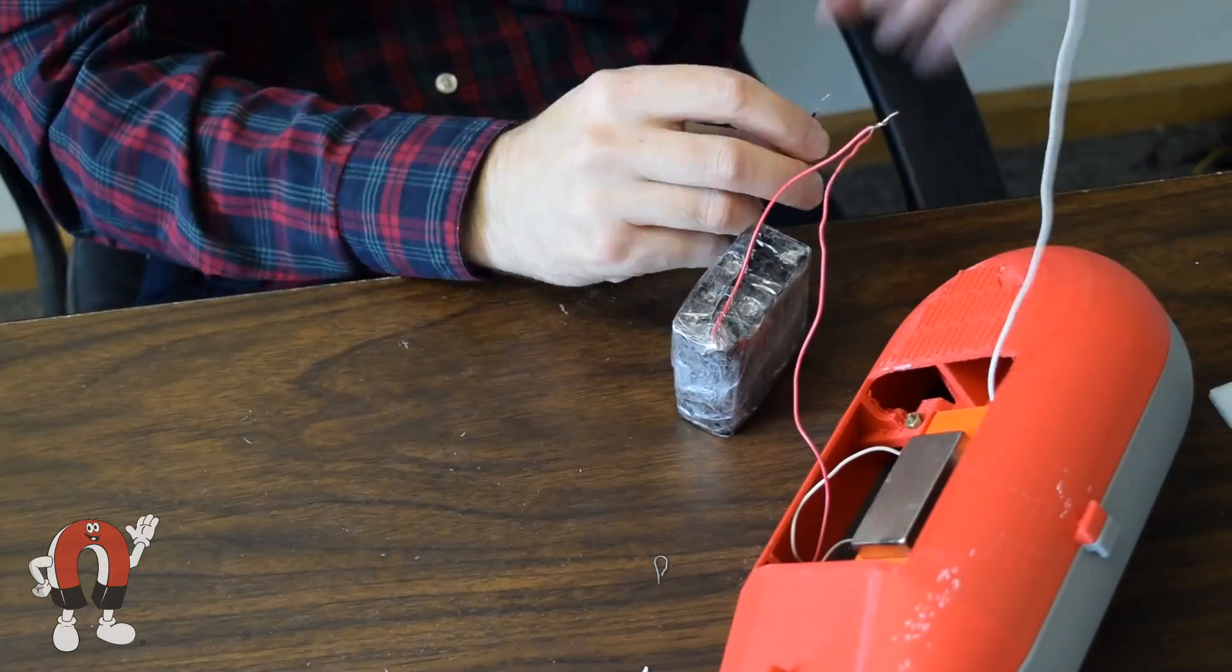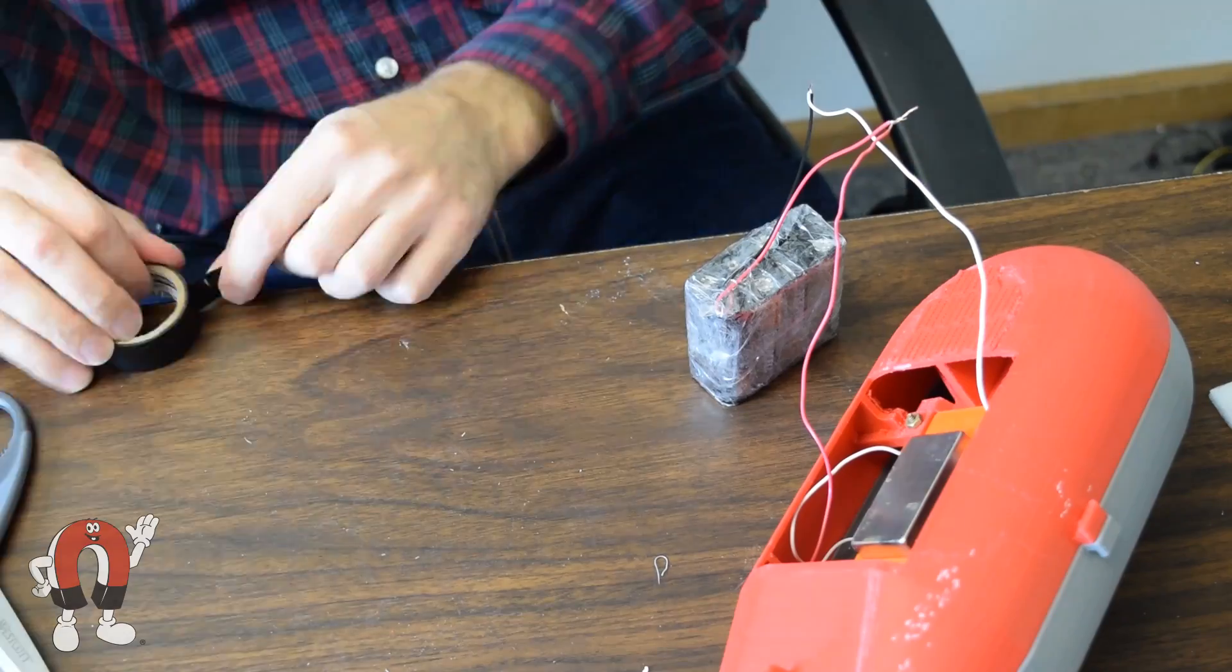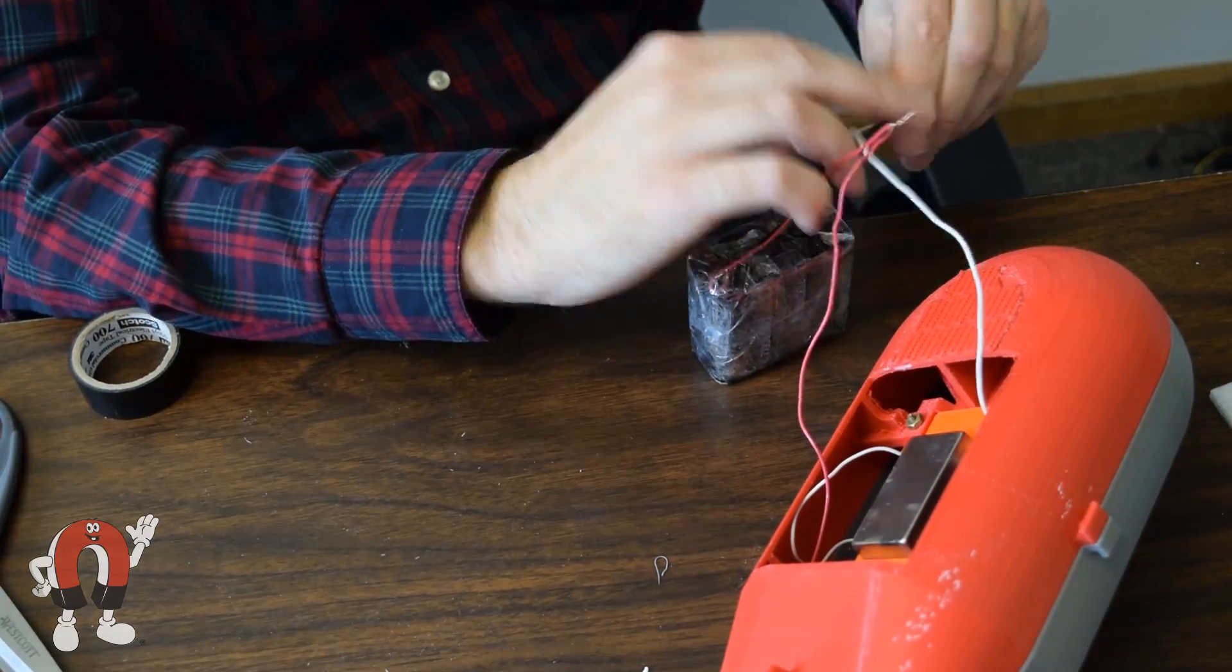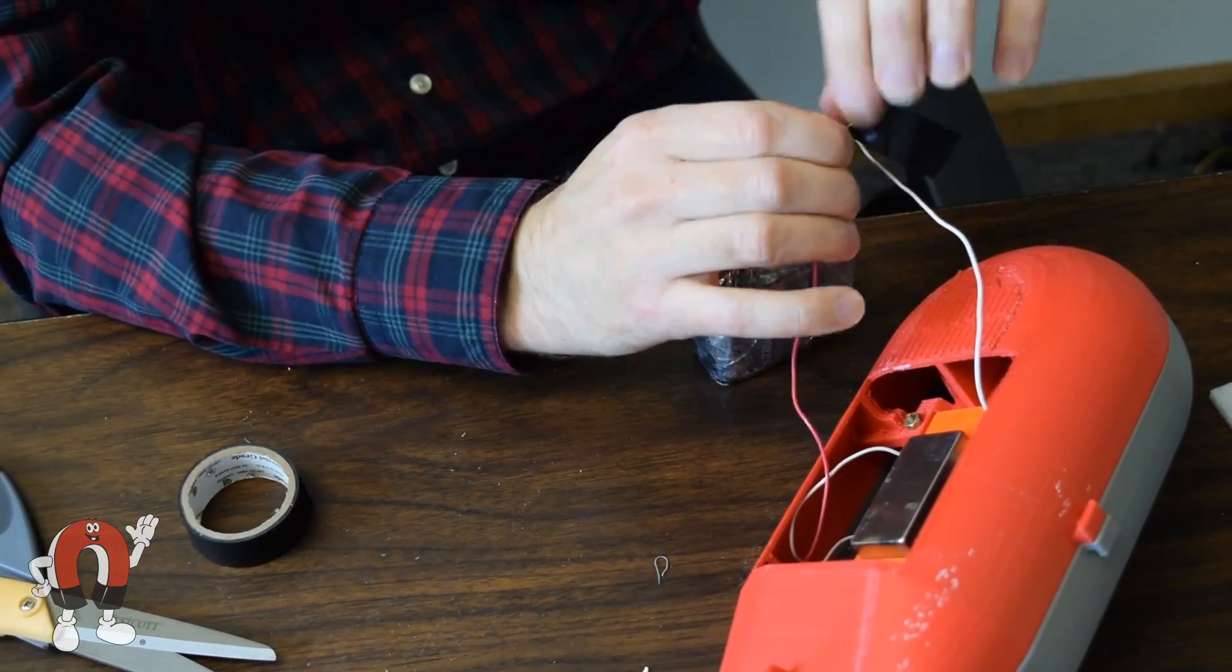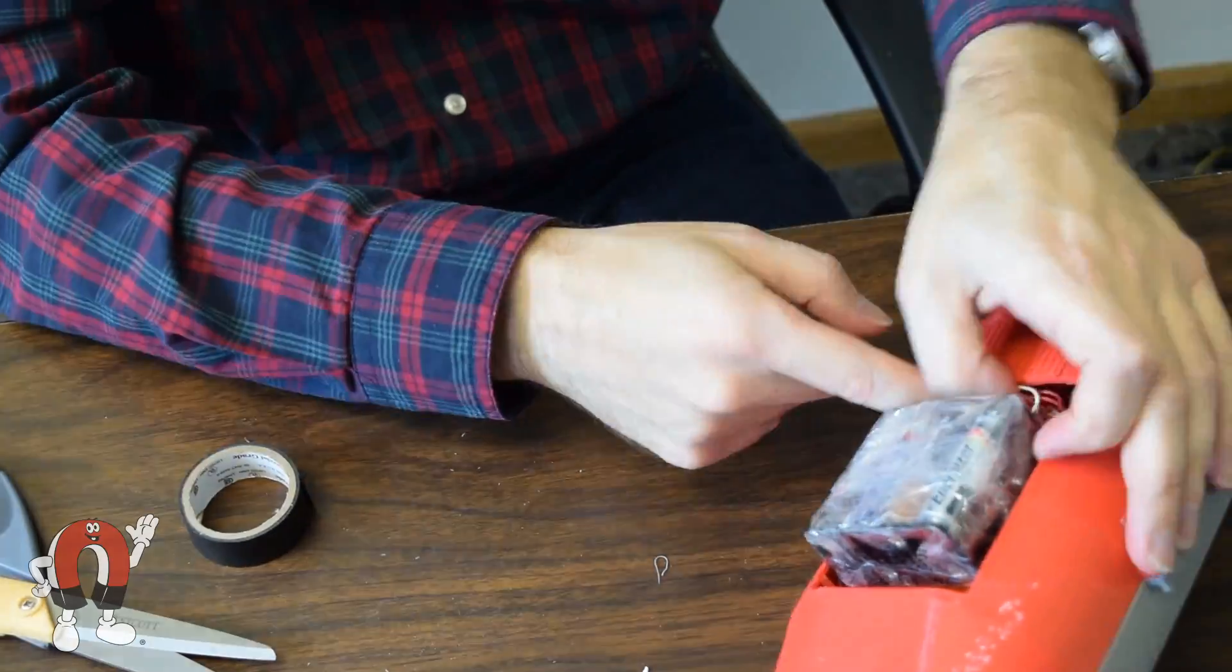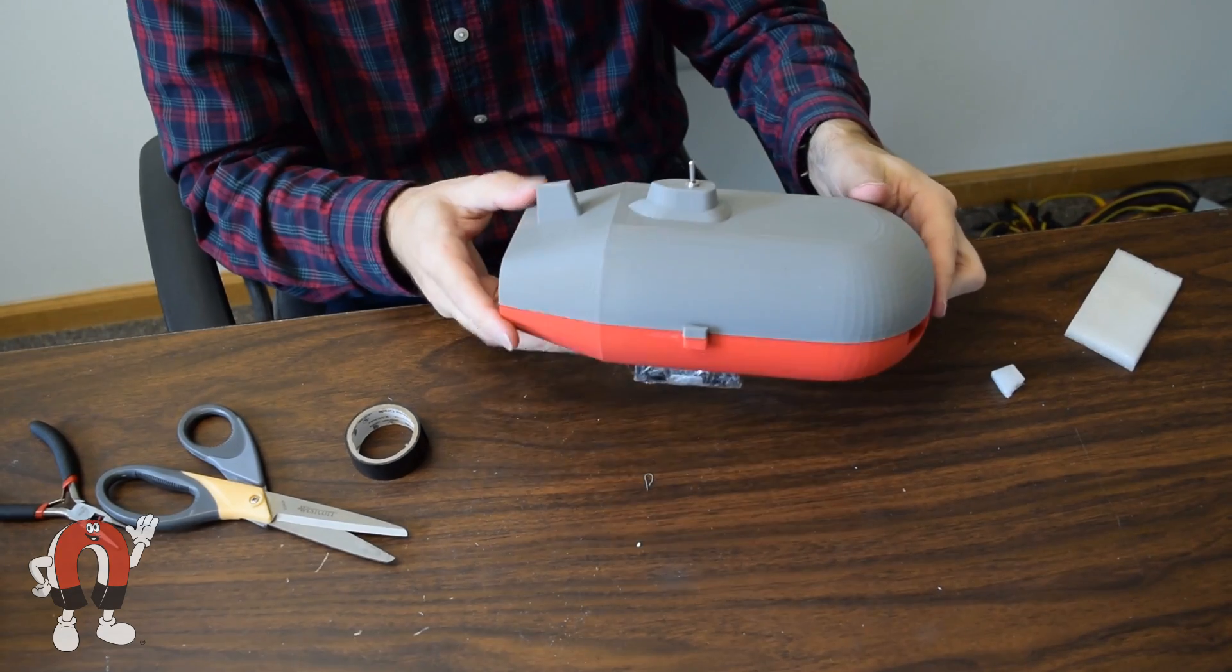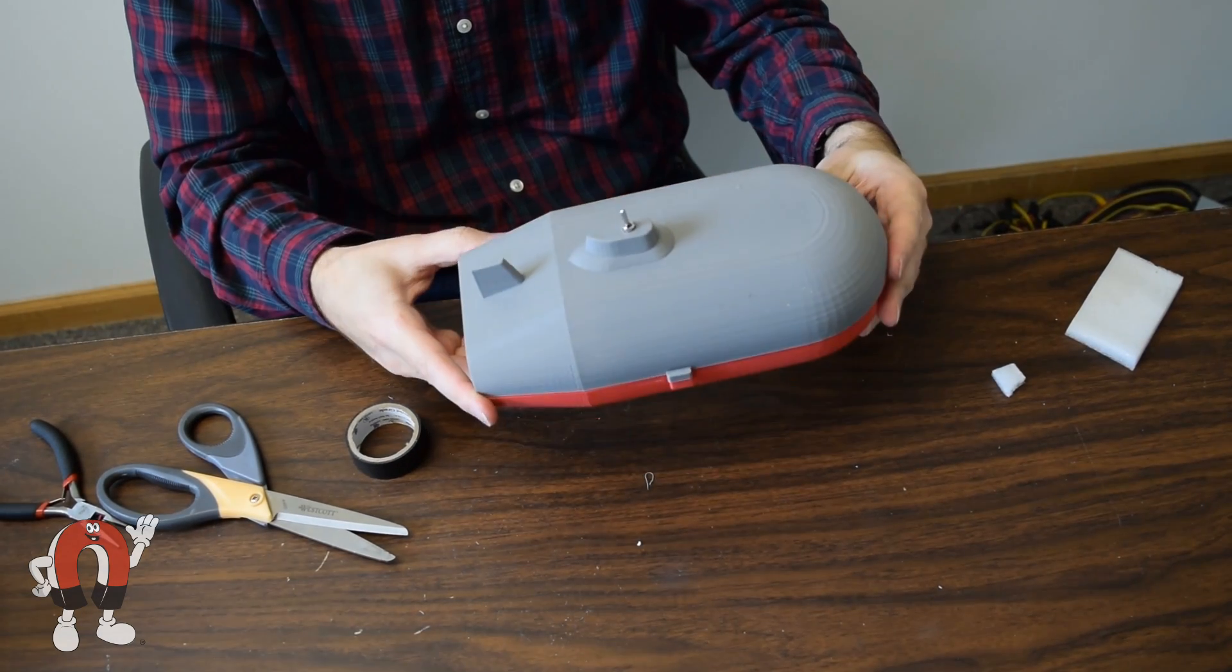The eight-pack of batteries is wrapped in packing tape in an attempt to waterproof it, and stuck to the lower magnet. The submarine is complete.